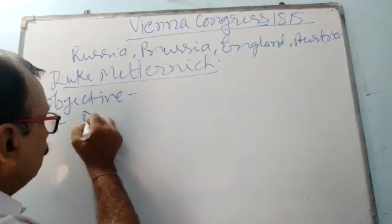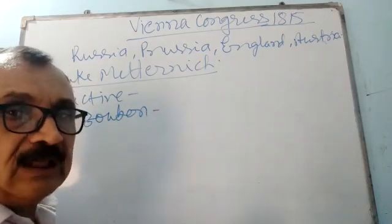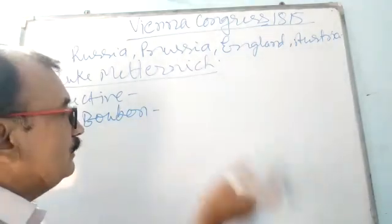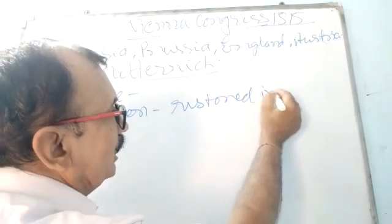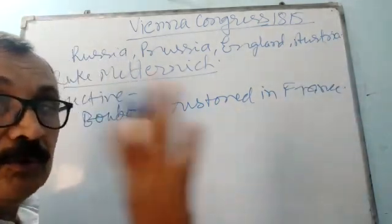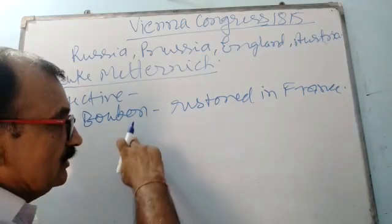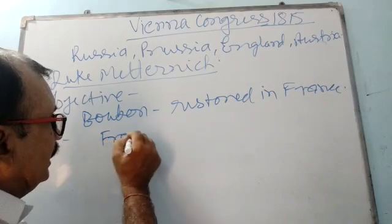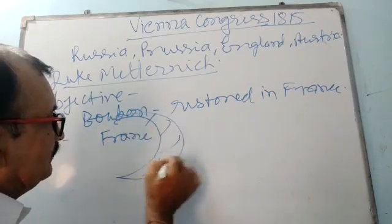First, the Bourbon King, which had been deposed in France in 1789, that dynasty was restored in France. Then, to stop French aggression in future, a series of strong states were created around France.